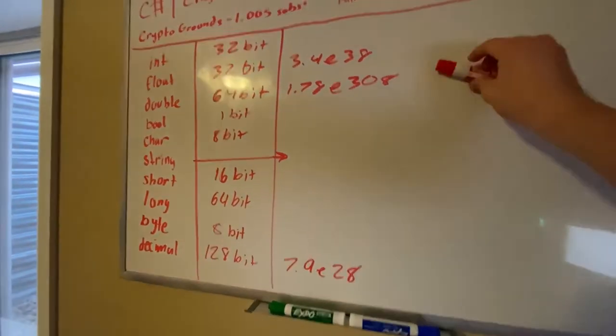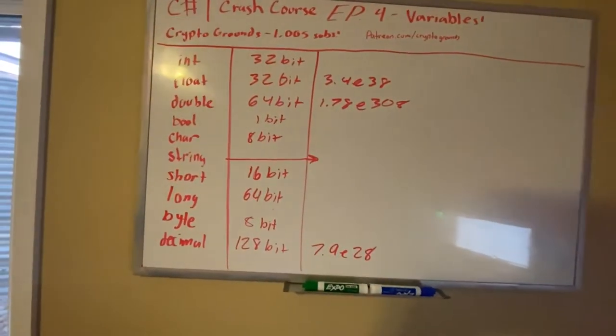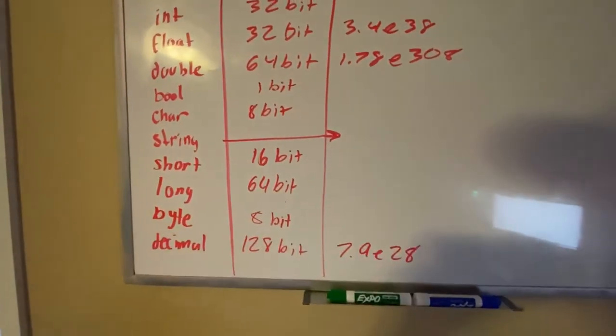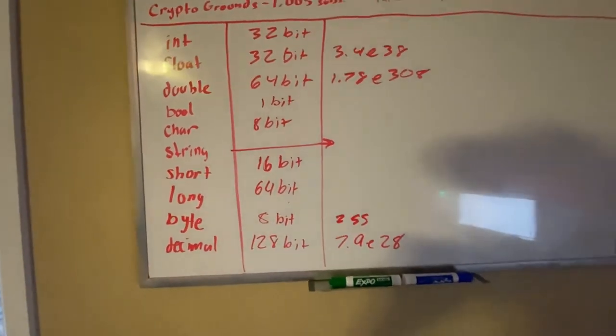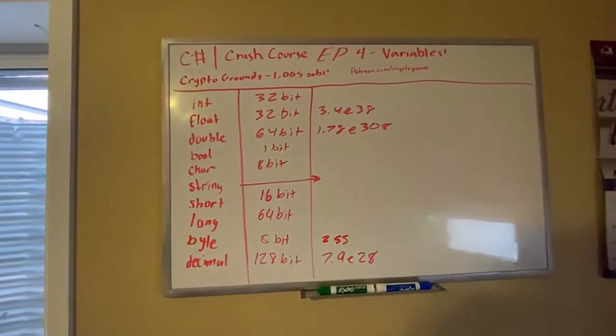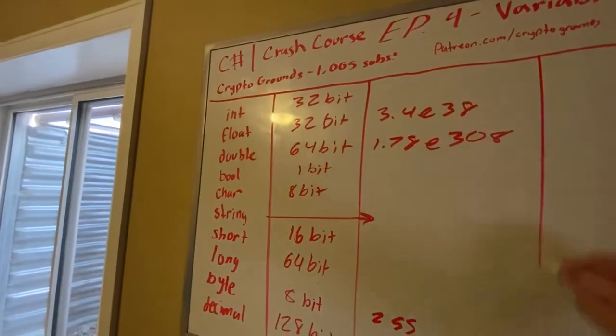Now you don't need to memorize these, but if you're familiar with them, if you want to know what your limit is, it's kind of good to know. Byte has a very small capacity. Since it's 8-bit, the smallest we can go is 255, or that's the largest, and it can go from 0 to 255, so it's got to be positive. These are the maxes by the way, these are max.